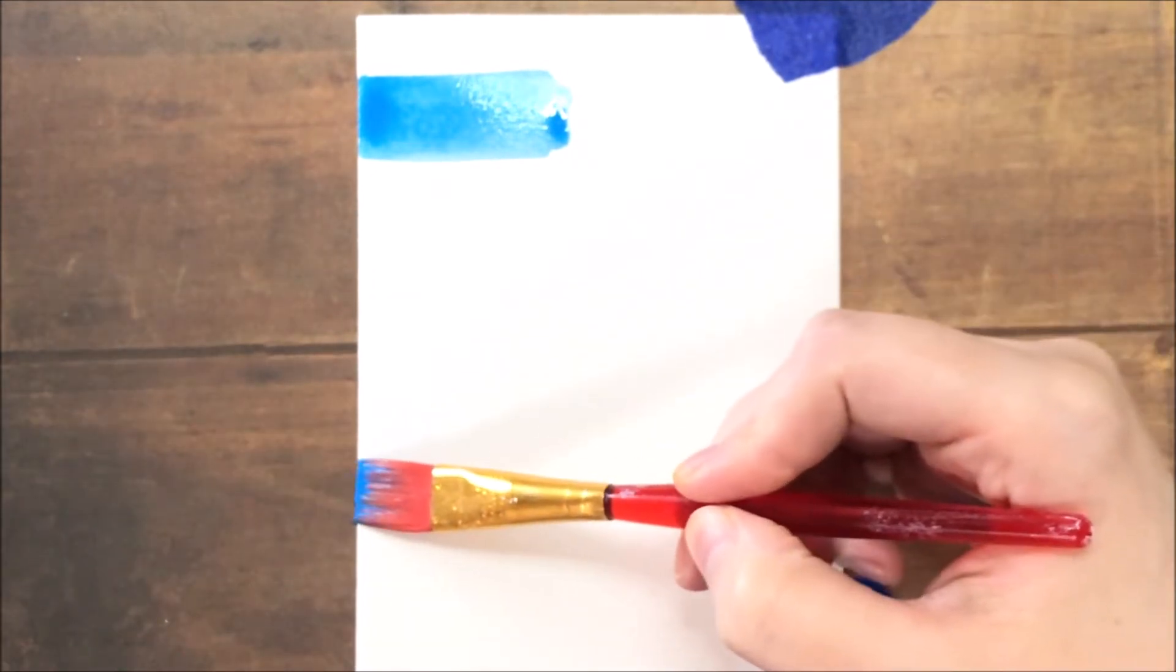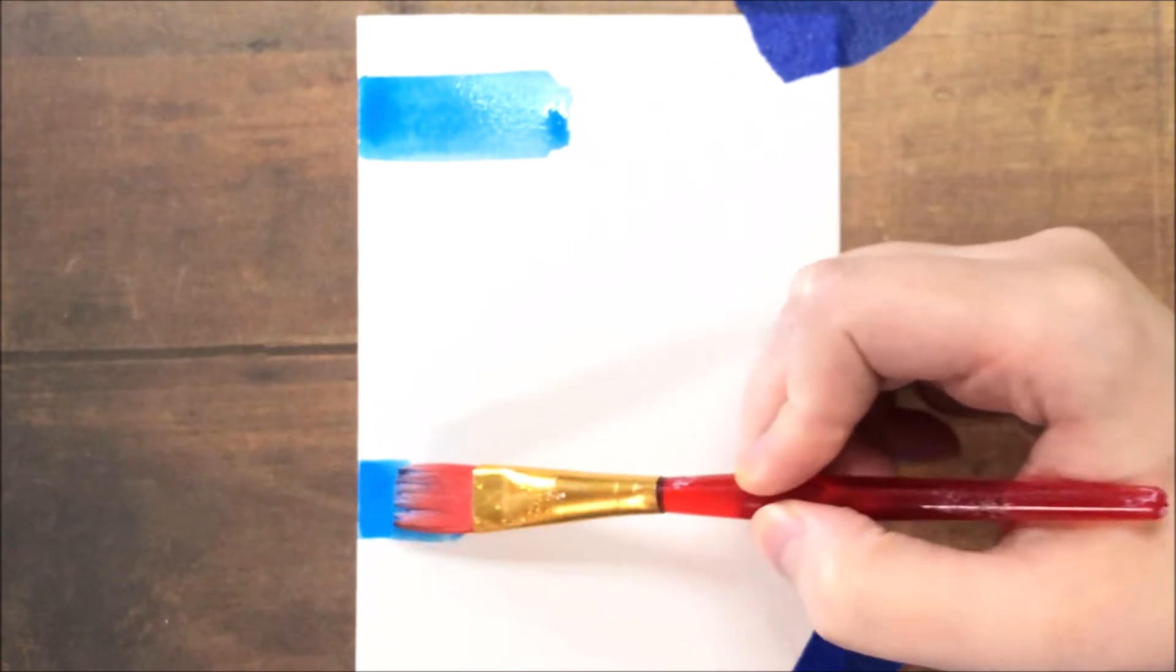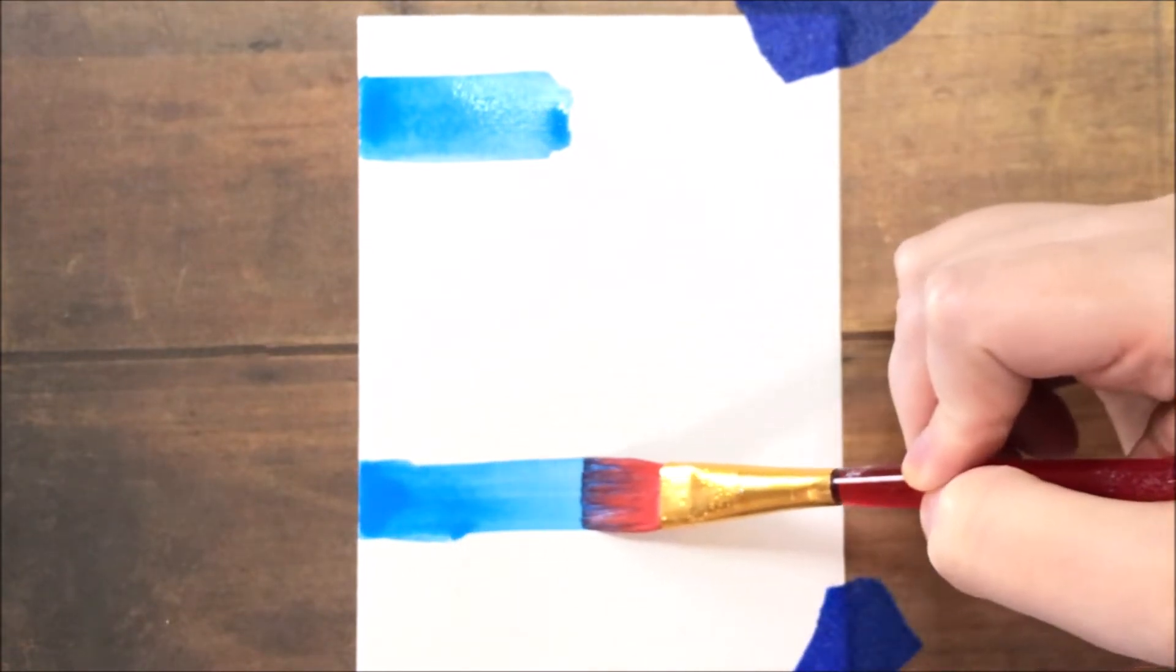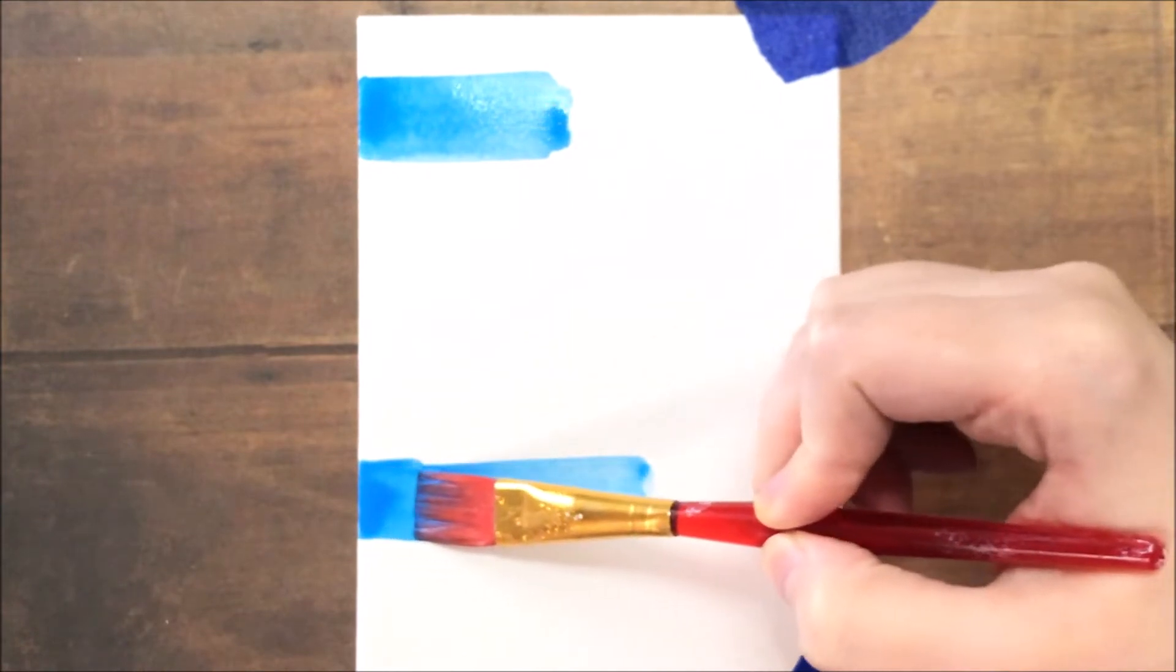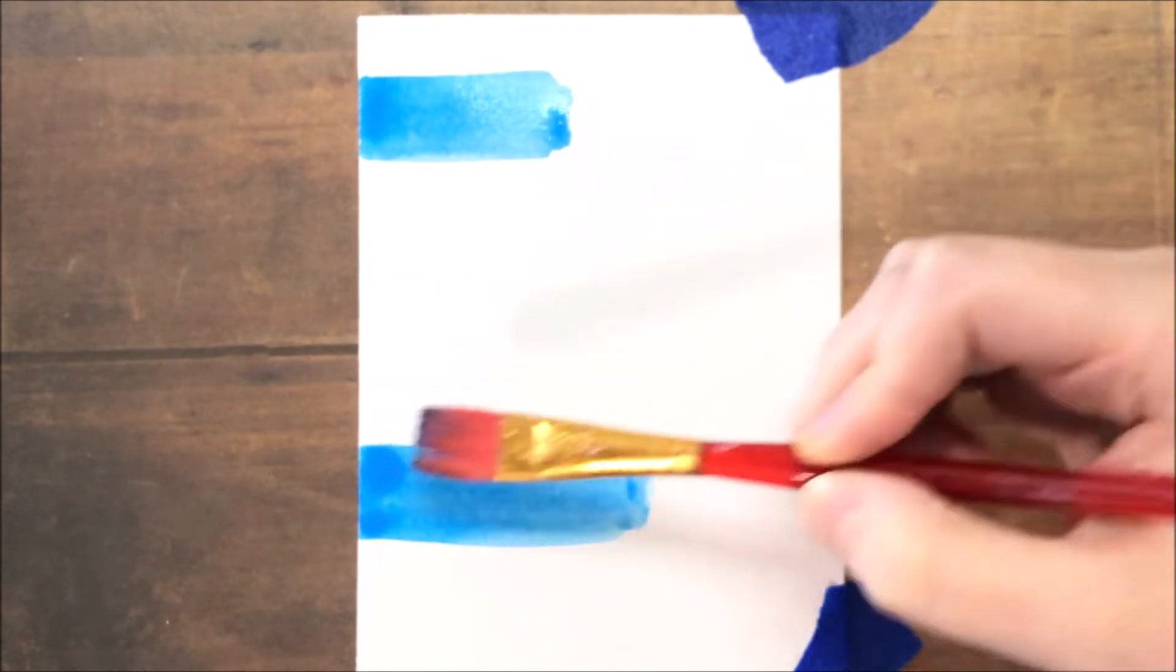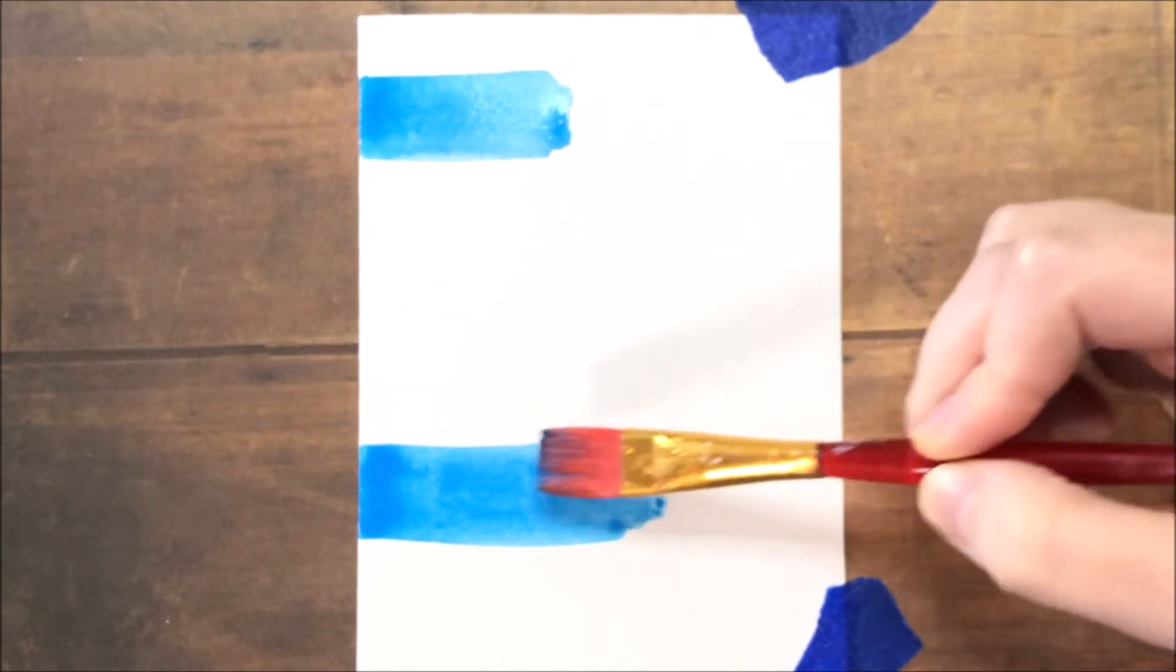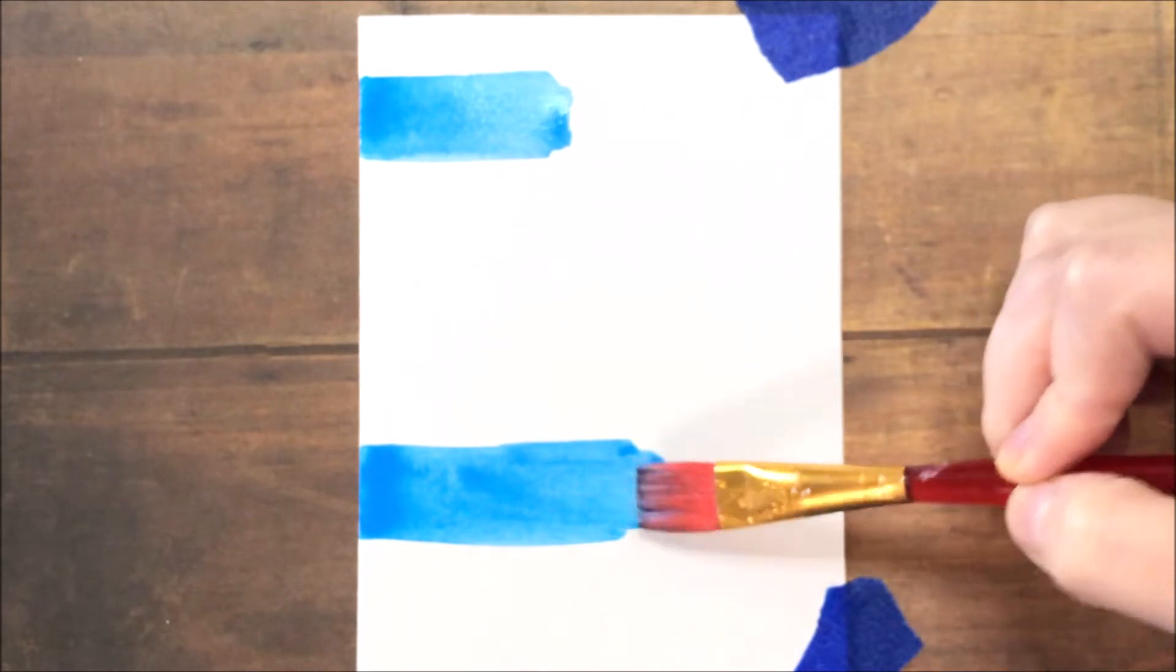And so I'm going to just lay my brush flat and pull that color over. Now this was kind of tricky to get my lines straight because I should have probably taped my card base down at an angle. And so my hand was not really at the proper angle to make straight lines. So you'll forgive me for that. In the end, I think it turns out okay.